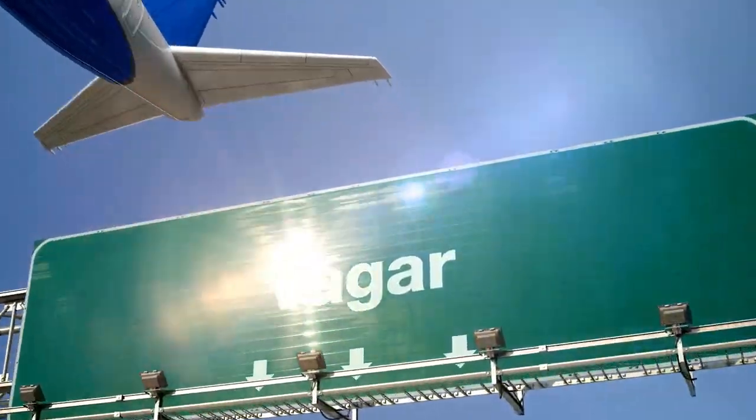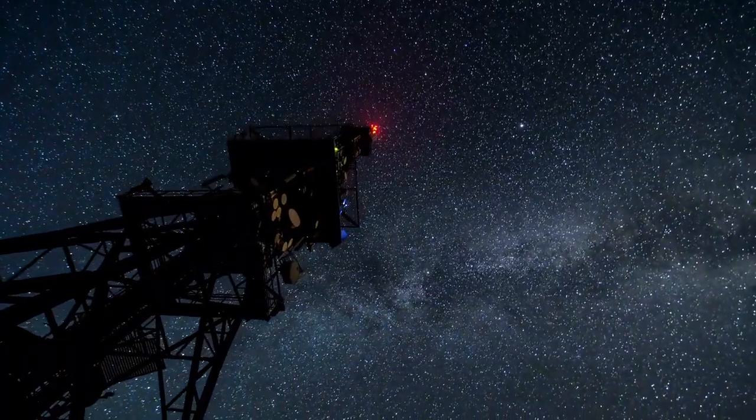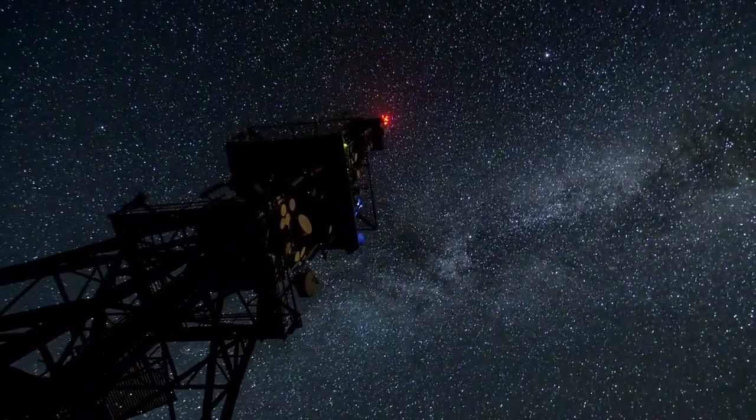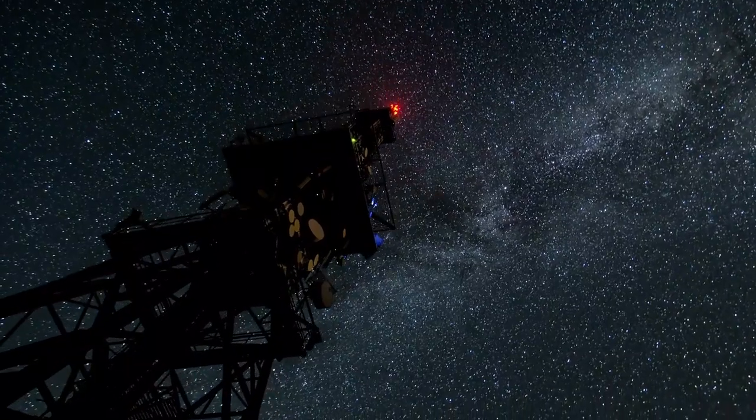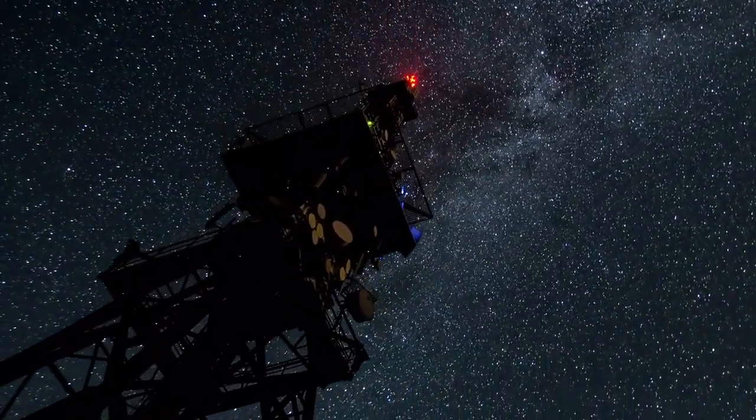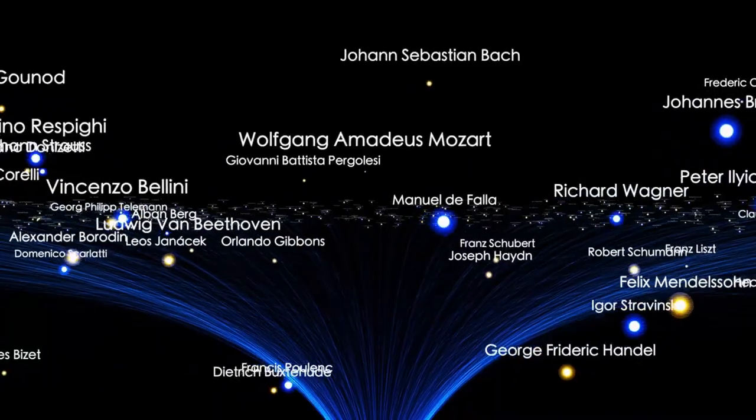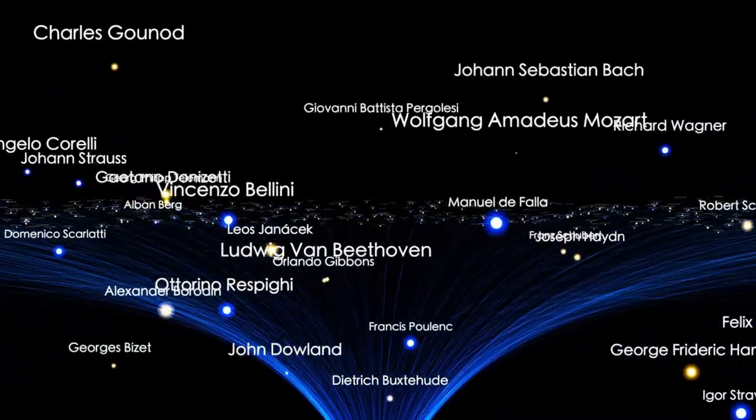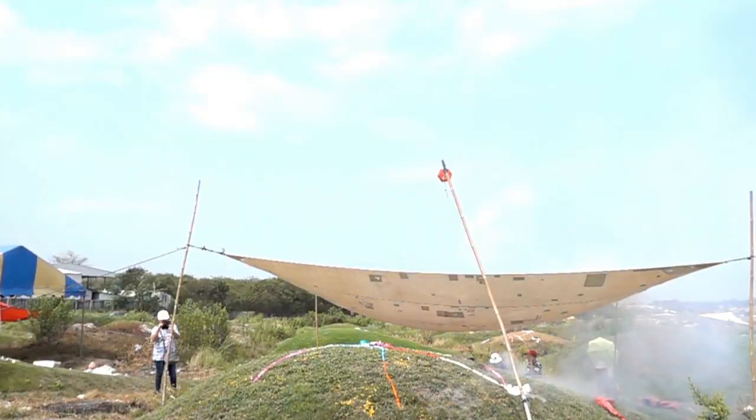What makes the ongoing success of these spacecraft so astonishing is the technology on board. Each Voyager probe is roughly the size of a small car, yet they carry just 69 kilobytes of onboard memory - less than the storage capacity of a single low-resolution photo on a modern smartphone.